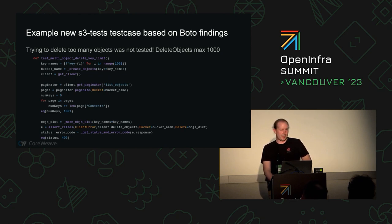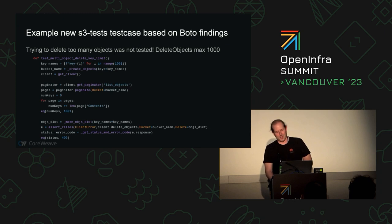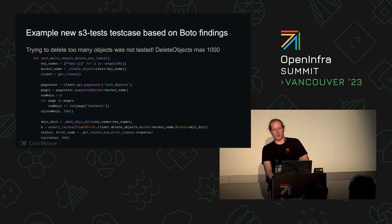When you do delete-objects, the S3 specification says at most 1,000 objects, and there was a tiny branch that returns: 'hey, you're sending too many' — and we had never tested that. This was the first test improvement submitted by the Summer of Code student: a tiny branch, two extra lines, and we're going to test this now. This is proof that the concept works: we found something that wasn't tested, we added one test case, and now we can show it is tested.